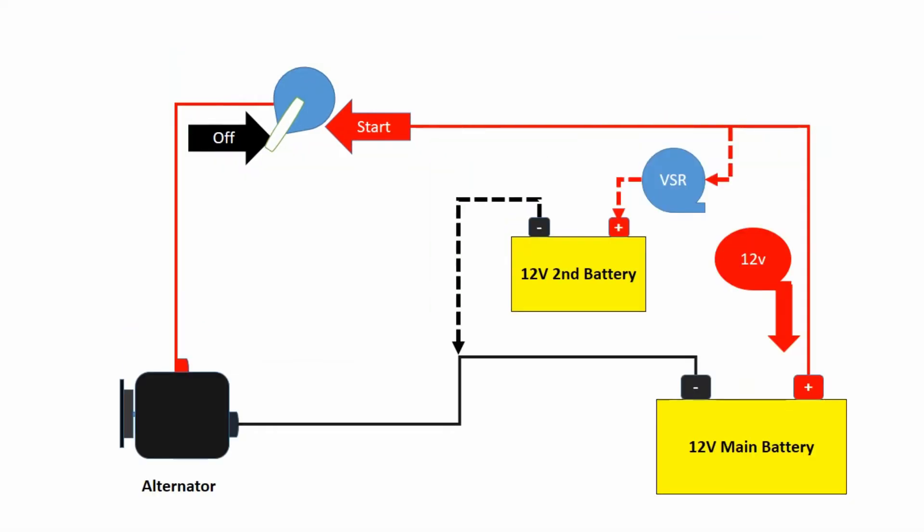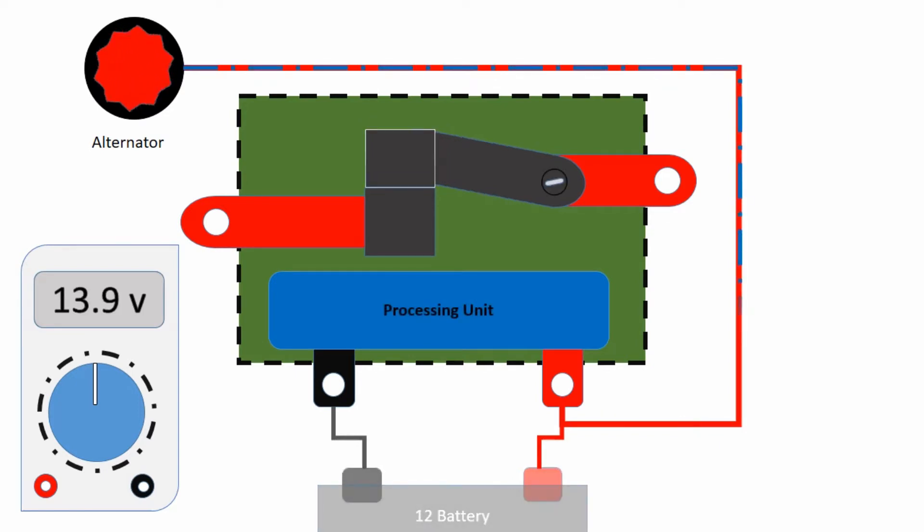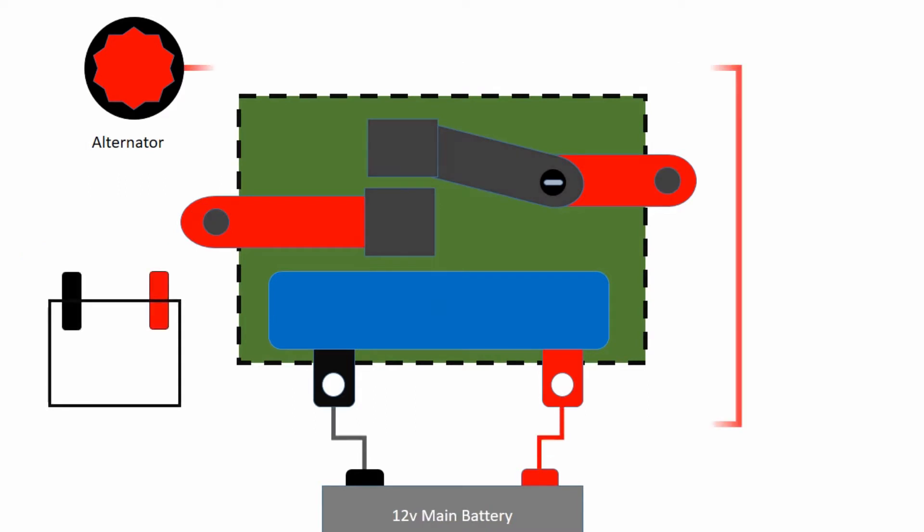Therefore, we have to have a unit that activate with the engine and deactivate when the engine is off. Even the battery voltage is 12, when the engine is started, it takes around 14 volt. This voltage change can be used to make a switch. We call it as voltage sensitive relay or VSR.